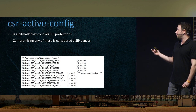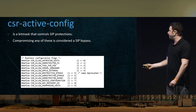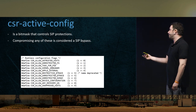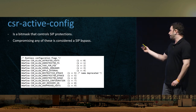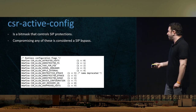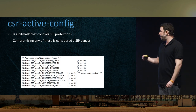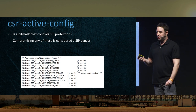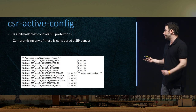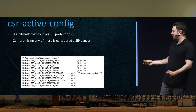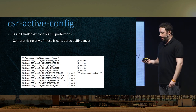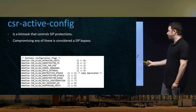The NVRAM variable is a bitmask that controls all the protections. Compromising any of these is considered a SIP bypass. Some interesting ones include: allowing you to load untrusted kernel extensions, bypassing file system checks by SIP, allowing task_for_pid (the equivalent of OpenProcess on Mac), kernel debugger internals, and unrestricted NVRAM. There are tons of interesting things to do if you're able to bypass SIP.